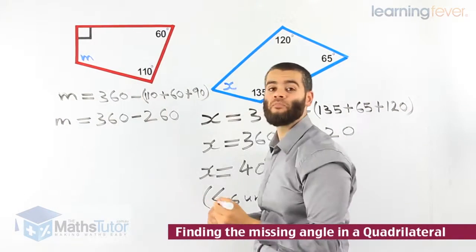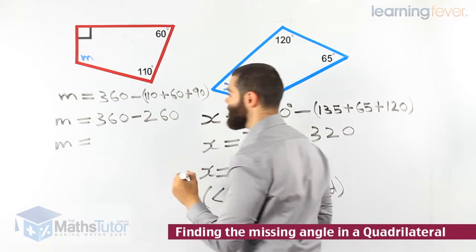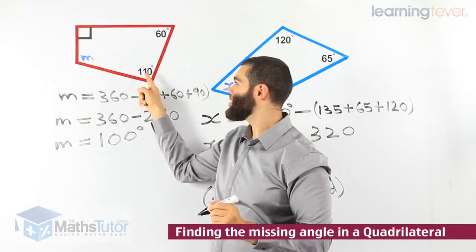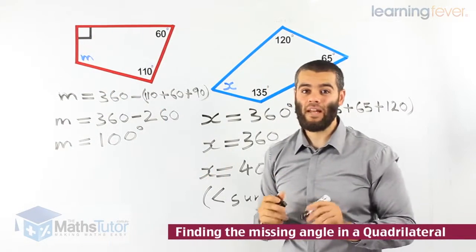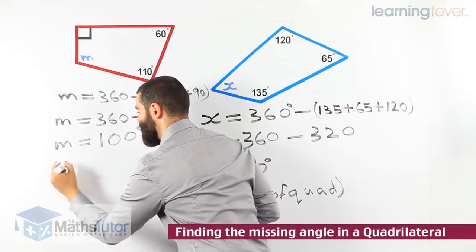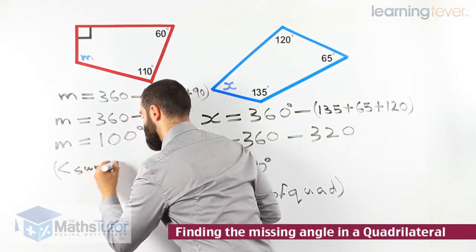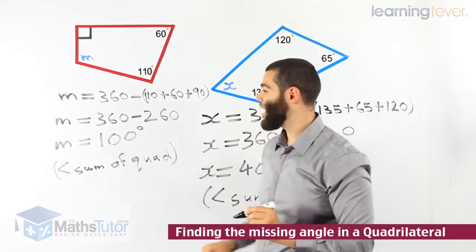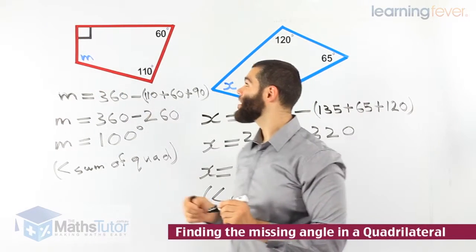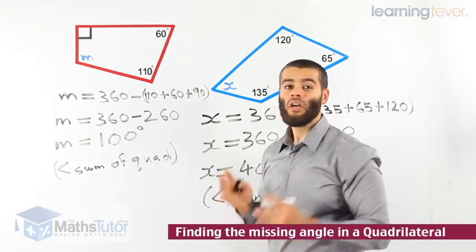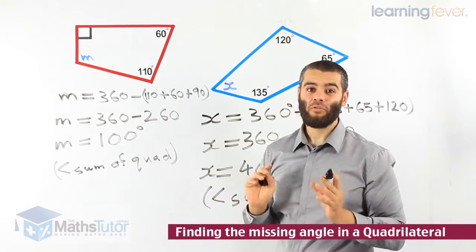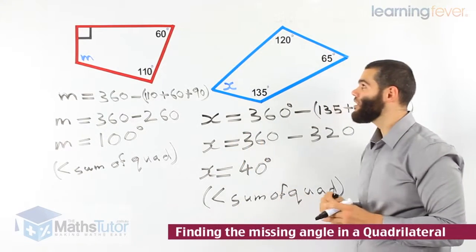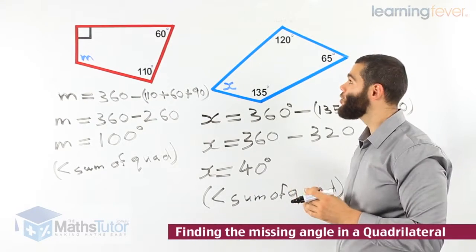These three angles add up to 260. So M is going to be 360 take away 260. M is 100 degrees. So M here is 100 degrees — 100 plus 110 plus 60 plus 90 all add up to 360. And our reason: angle sum of a quadrilateral. We're saying that 100 degrees is the missing angle. No matter how big or how small, what shape they are, the angles always add up to 360 degrees. This is how to find the missing angle using the angle sum of a quadrilateral in all four-sided shapes.